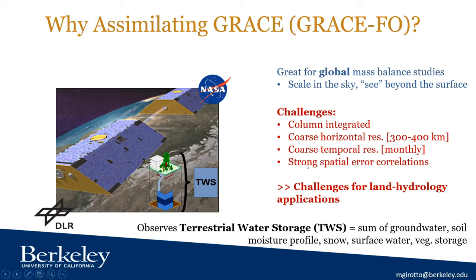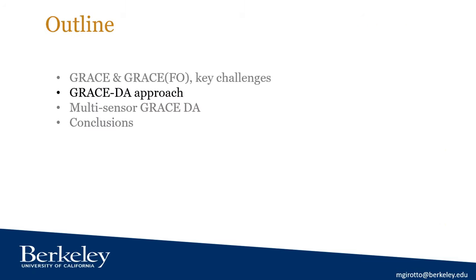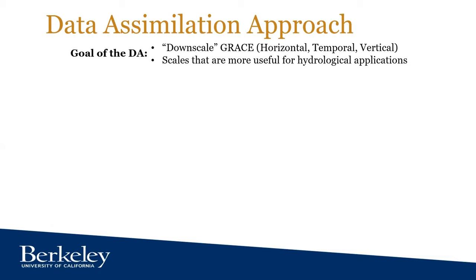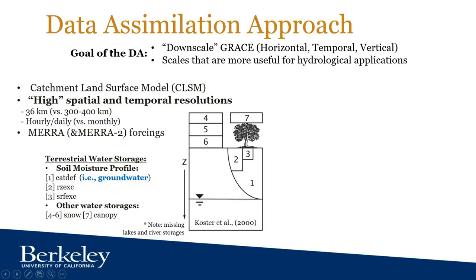On top of that, the observations also come with very strong spatial error correlation. Our approach was to use data assimilation to downscale — that is, to reduce those very large coarse spatial and temporal resolution observations from GRACE to scales more useful for hydrological applications. We do so by leveraging models that we can run at high spatial resolution. In this specific case, we use the Catchment Land Surface Model, the land model used at NASA GMAO.